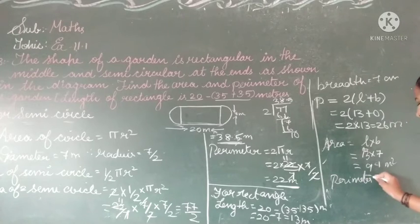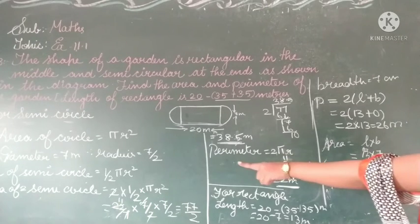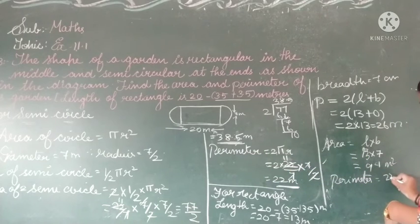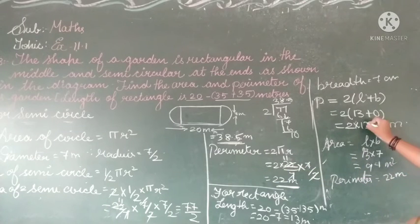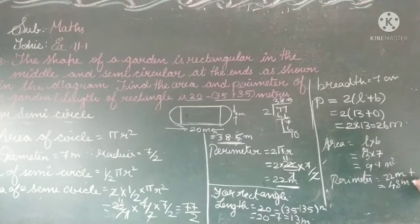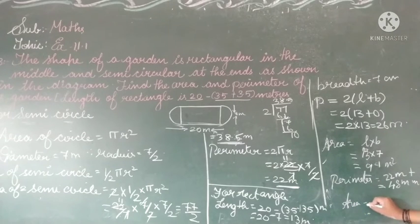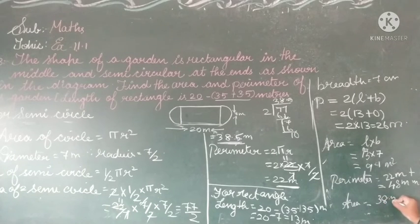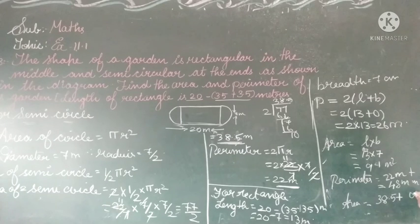Now the perimeter of the garden equals the perimeter of the two semicircles plus the perimeter of the rectangle: 22 + 26 = 48 meters. The area of the garden equals area of two semicircles plus area of rectangle: 38.5 + 91 = 129.5 square meters.